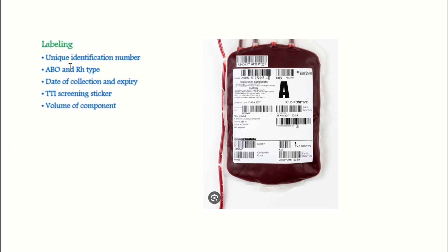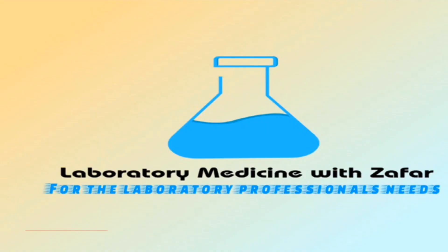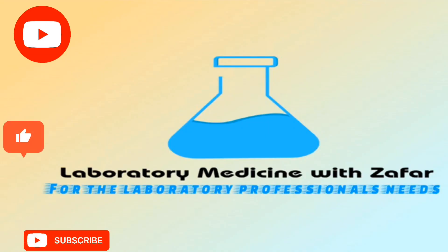To enhance quality in the blood bank, appropriate labeling is essential. Labels must contain the unique identification number, ABO and Rh type, date of collection and expiry, transfusion-transmissible infection (TTI) screening sticker, and volume of the component.